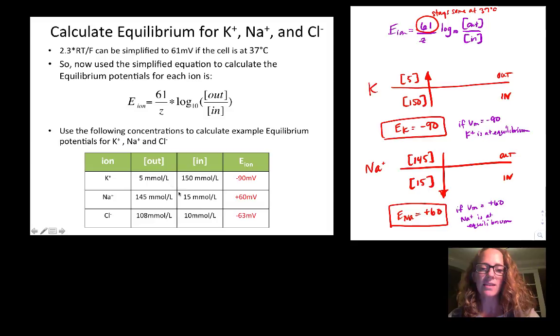Another way of saying this is that if the membrane is fully permeable to potassium, potassium wants to pull the membrane potential down to minus 90 towards its equilibrium. Or if the membrane is fully permeable to sodium, sodium wants to pull the membrane potential up to positive 60. And we could calculate this for any given concentration in any cell.